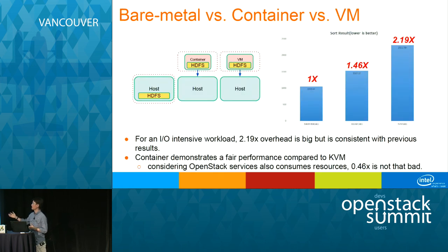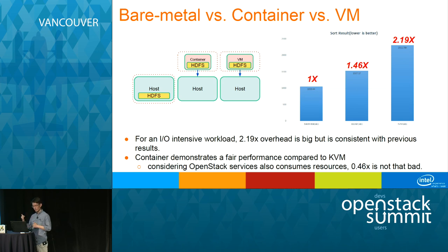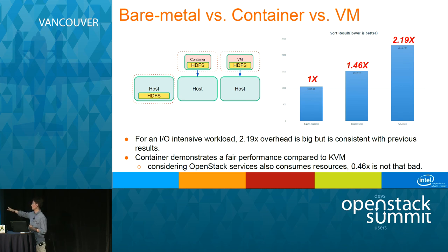The last test case compared bare metal versus container versus VM. Since Sahara doesn't support containers well, we did some hacking to make containers work using the Nova Docker driver. Results show VM has 2x overhead, container has 1.4x overhead compared to bare metal. Importantly, we did tuning for the VM case but the container case was out of the box — it's still much better than VM. We think container is very promising in terms of performance compared to VM.